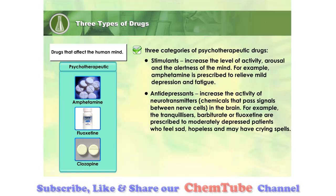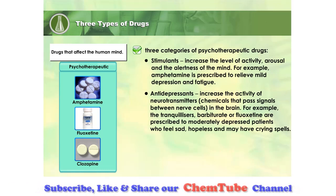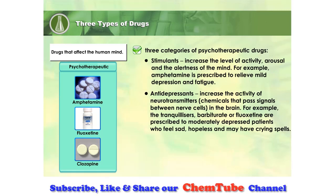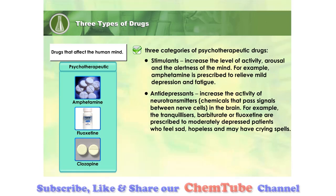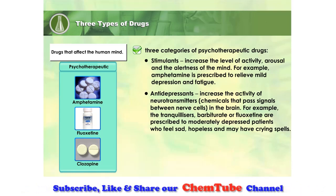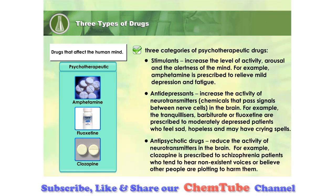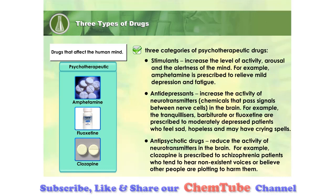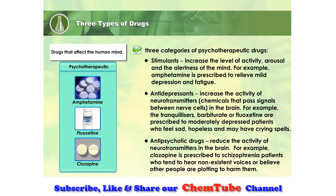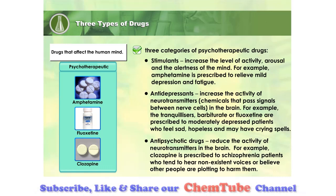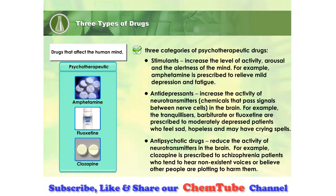Antidepressants are used to increase the activity of neurotransmitters, chemicals that pass signals between nerve cells in the brain. For example, the tranquilizers barbiturate or fluoxetine are prescribed to moderately depressed patients who feel sad, hopeless and may have crying spells. Anti-psychotic drugs are used to reduce the activity of neurotransmitters in the brain. For example, clozapine is prescribed to schizophrenia patients who tend to hear non-existent voices or believe other people are plotting to harm them.